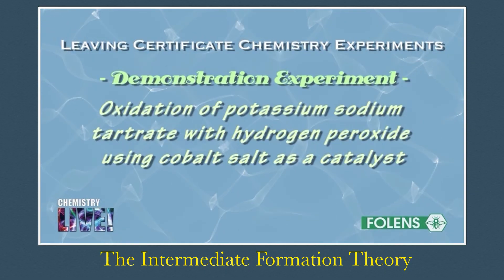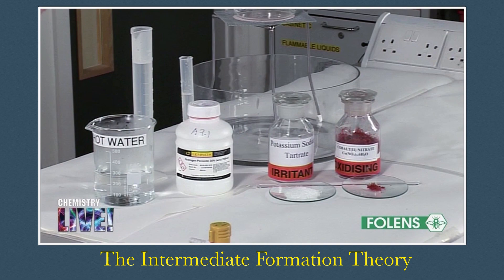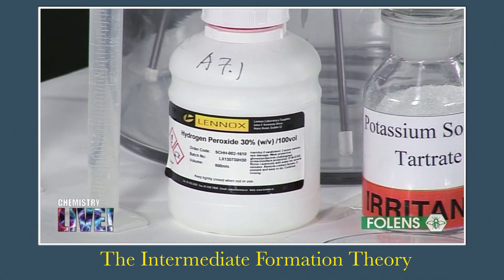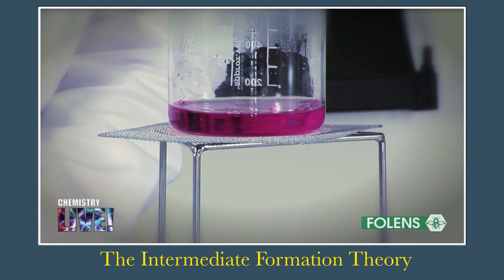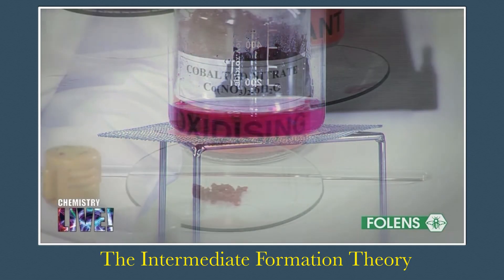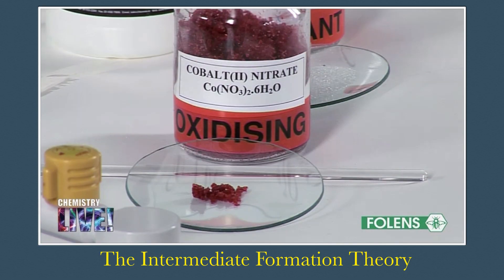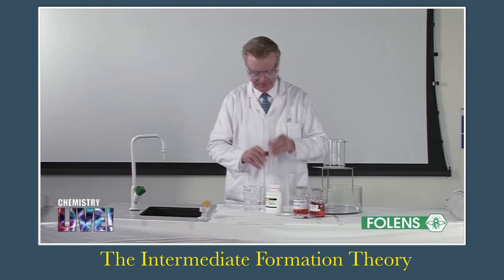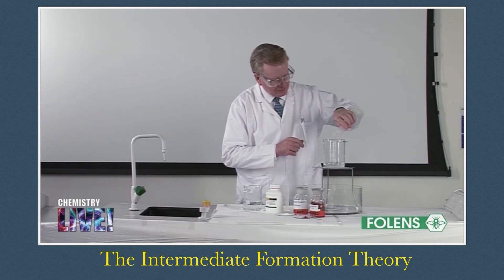Teacher demonstration experiment. Oxidation of potassium sodium tartarate with hydrogen peroxide using cobalt salt as a catalyst. An experiment which provides visual evidence for the intermediate formation theory of catalysis is the oxidation of a compound called potassium sodium tartarate using hydrogen peroxide. This reaction is catalyzed by the presence of CO2 plus ions which have a pink colour. We will use cobalt 2 nitrate as the source of CO2 plus ions but any other salt of cobalt, for example cobalt chloride, works also. About 10 grams of potassium sodium tartarate is dissolved in about 100 centimetres cubed of hot water at a temperature of about 70 degrees celsius.